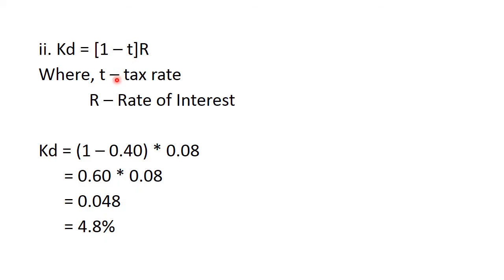R is the rate of interest and T is the tax rate. KD is 1 minus 40% since tax rate is 40%. We use it as 1 minus 0.40 multiplied by 0.08. It comes to 0.60 multiplied by 0.08 that is 0.048 that is 4.8%. You do it in your notebook, you will understand it in a better way. That is your cost of debentures, perpetual bonds.